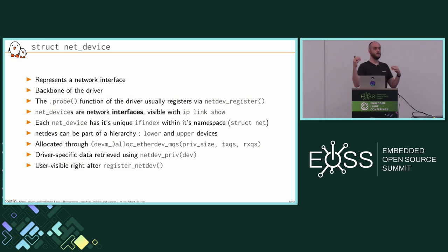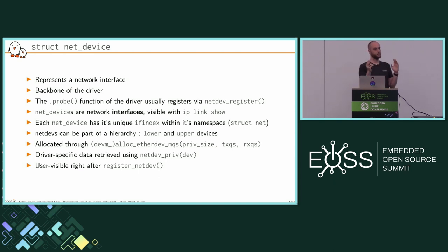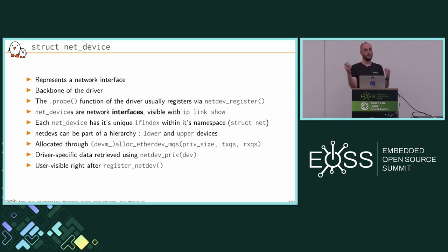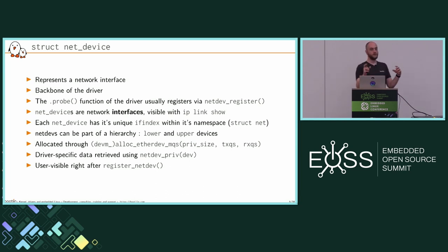You can have hierarchies of net devices — trees with parent and child interfaces, called lower and upper interfaces. For example, when you create a bridge, multiple interfaces are bridged through another net device. To allocate your net device for Ethernet, use alloc_etherdev_mqs, which lets you specify the number of queues and allocates all necessary resources. You also pass a private size for driver-specific context, accessed with netdev_priv.